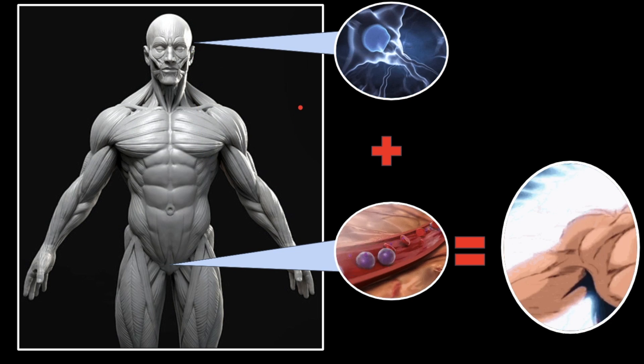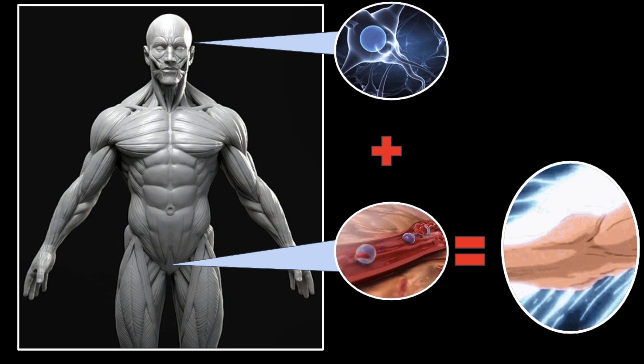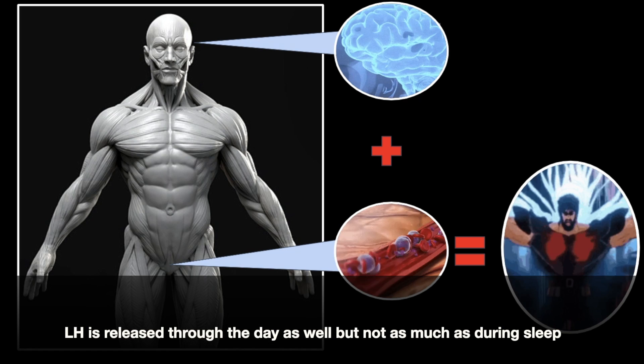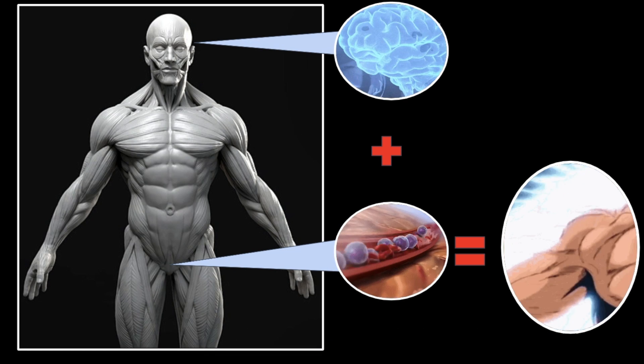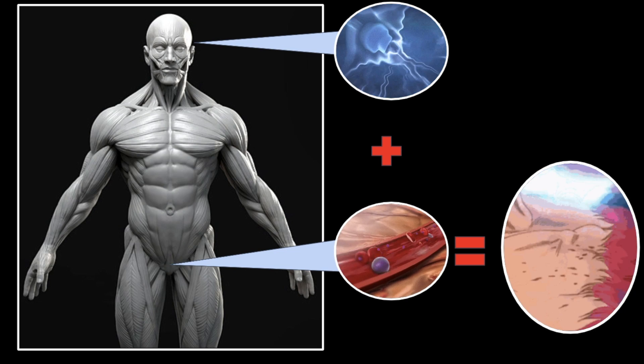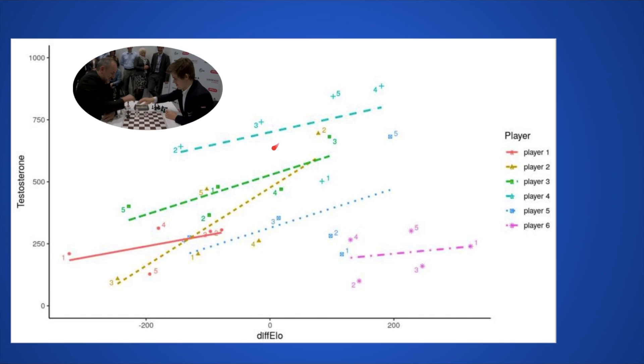Sometimes the body needs quick testosterone production for you to rise to the challenge, defeat a foe, or engage in sexual activities. And that's where the catecholamine pathway comes through. And that's what happened in the study. Whenever you're competing, your body releases a ton of adrenaline and a ton of noradrenaline, which are obviously made from dopamine.